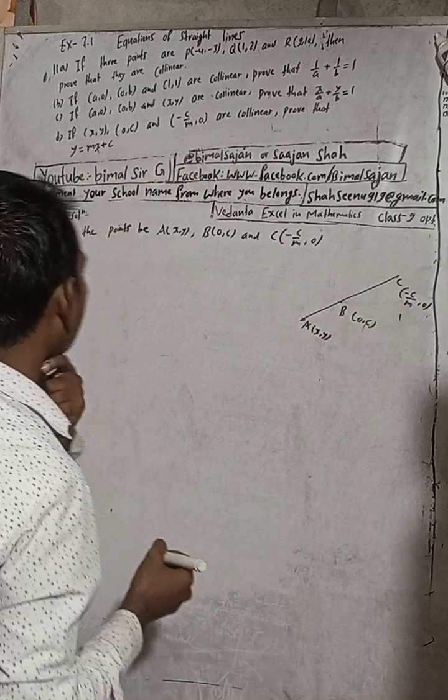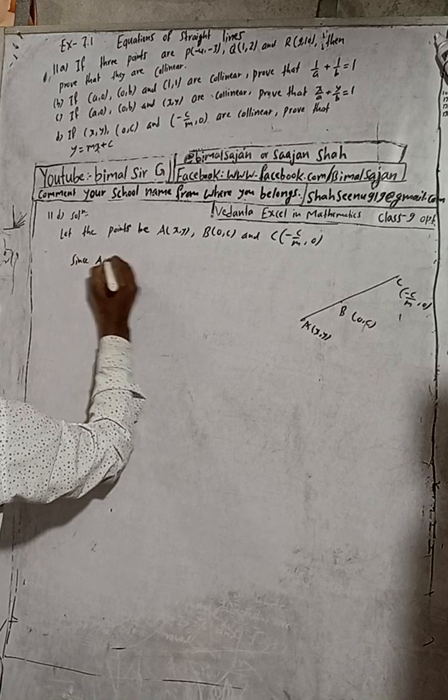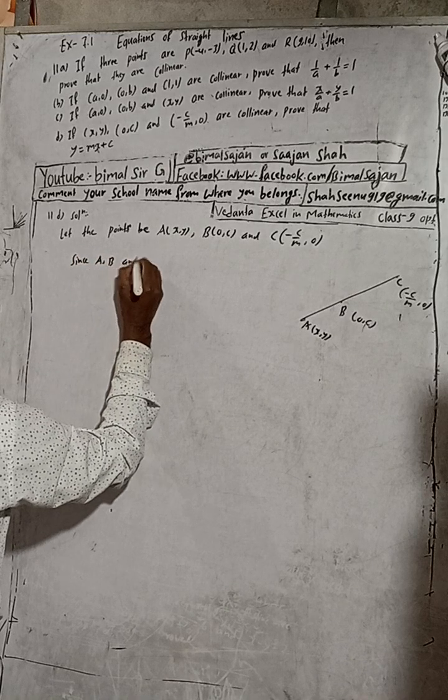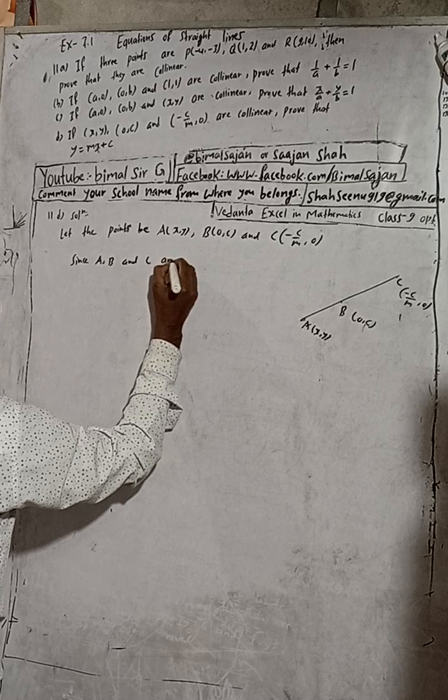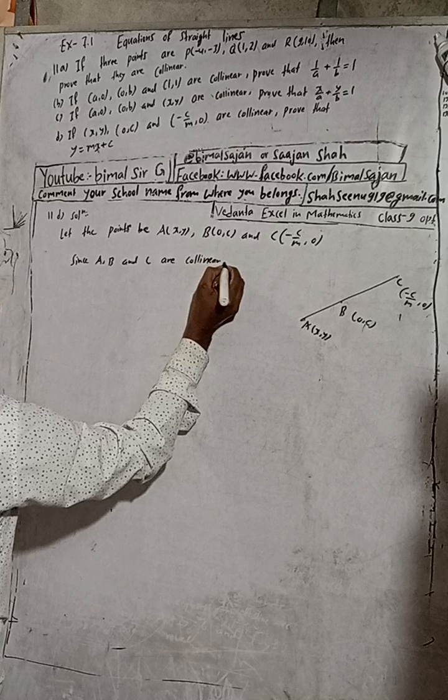Since A, B, and C are collinear, the slope of AB must equal the slope of BC.